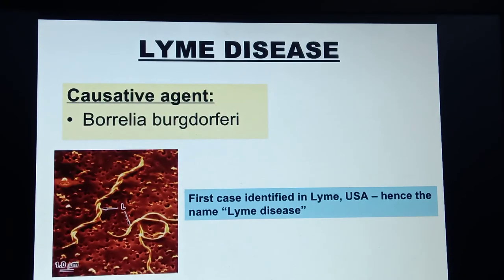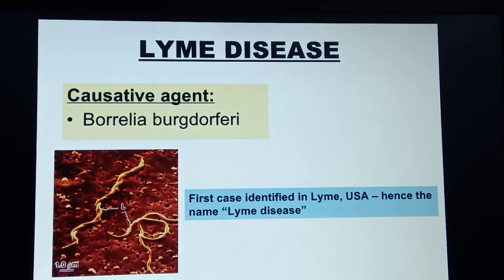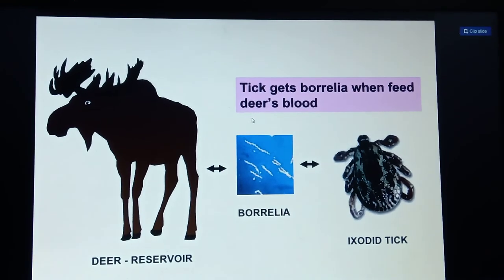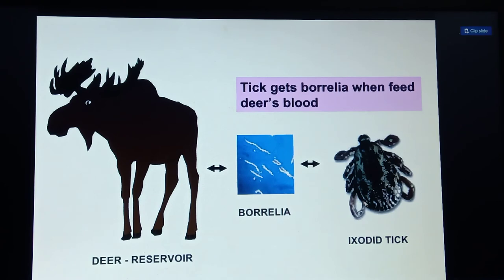The third disease is Lyme disease, also called Borrelia burgdorferi. The causative agent is Borrelia burgdorferi. The first case was identified in Lyme, USA, hence the name Lyme disease. The reservoir is deer — the Borrelia infects deer, and ticks acquire Borrelia by feeding on infected deer blood.